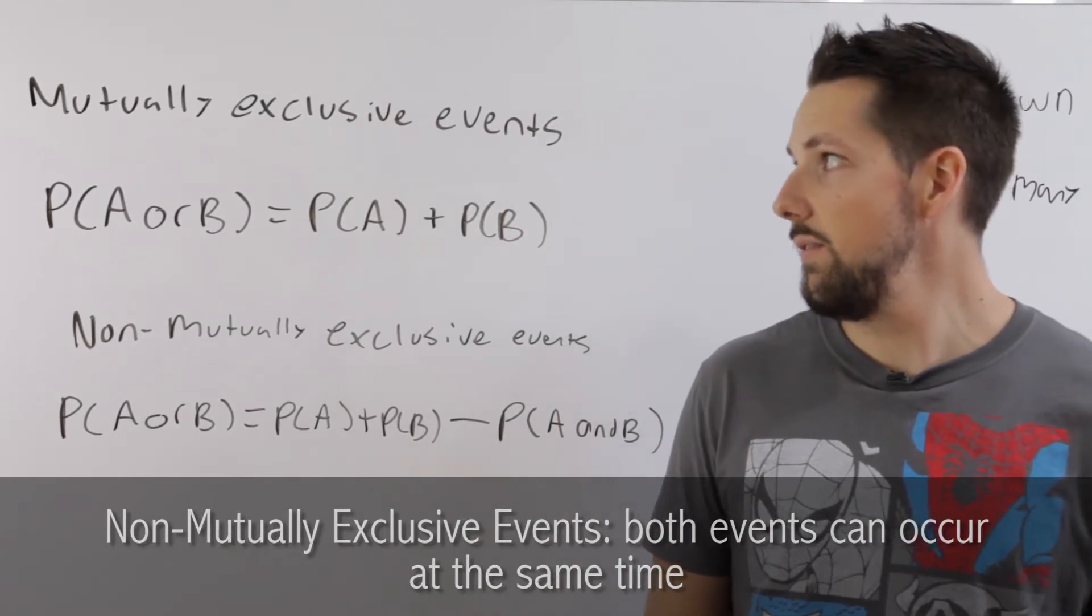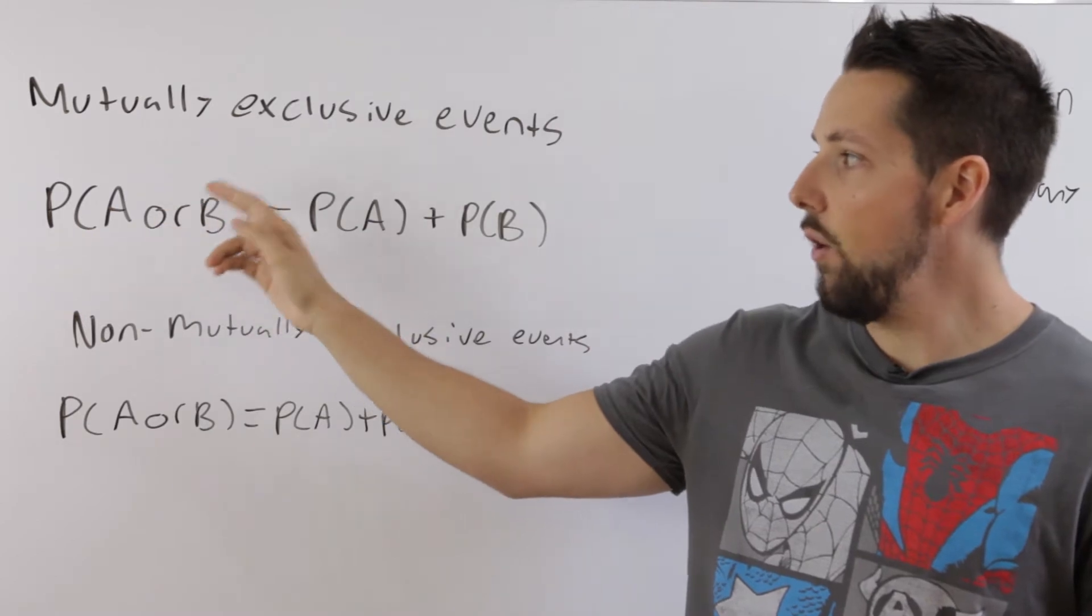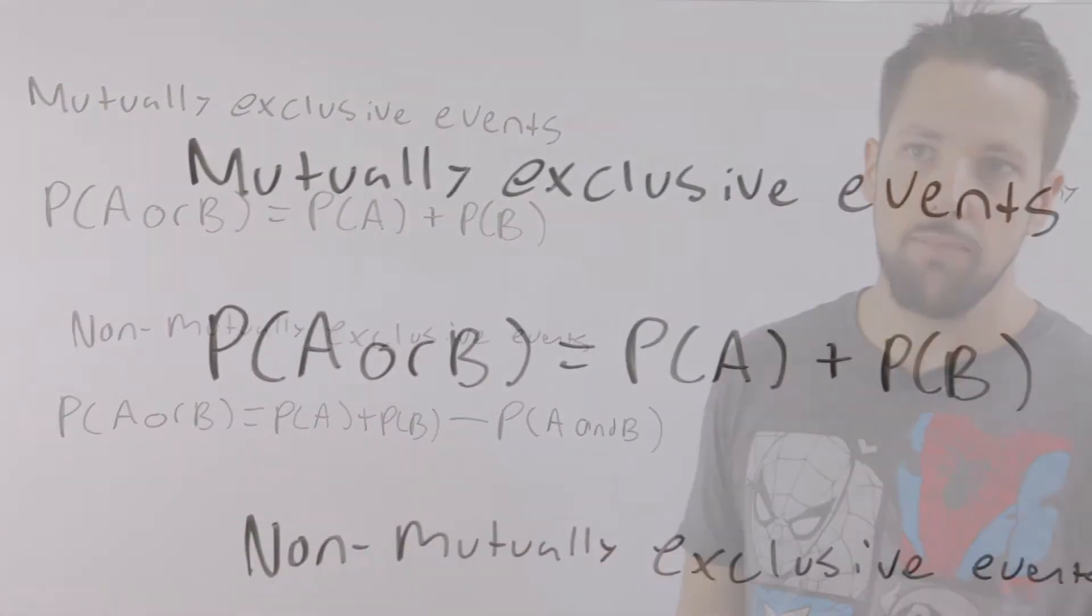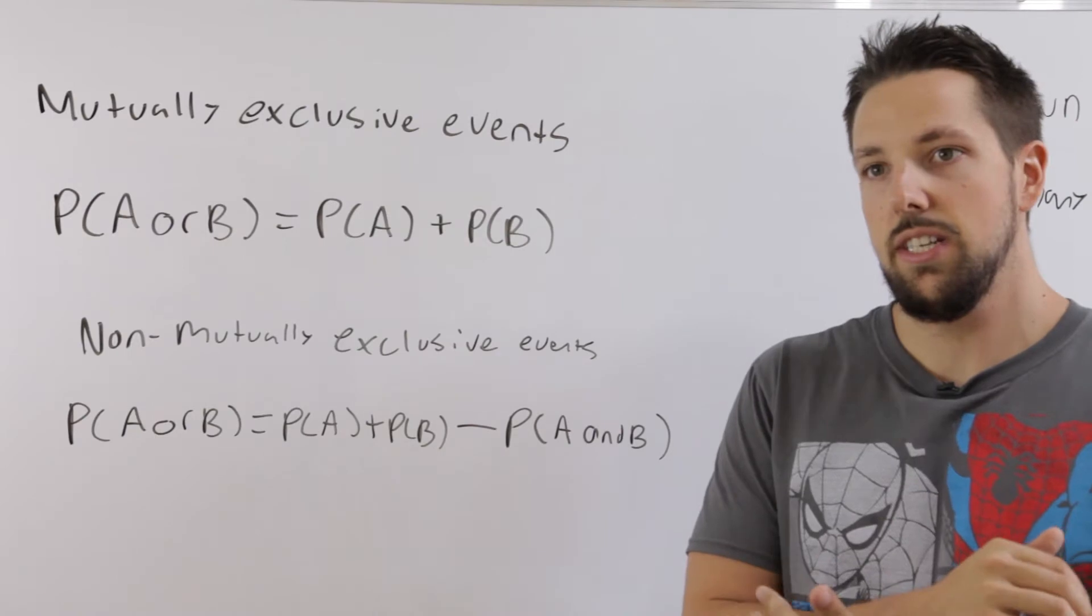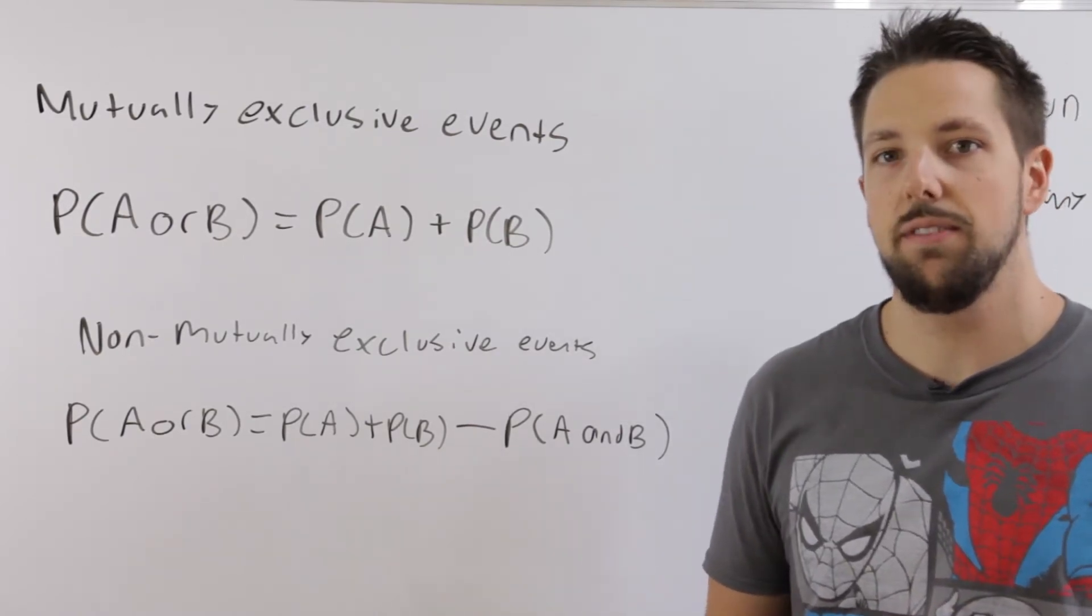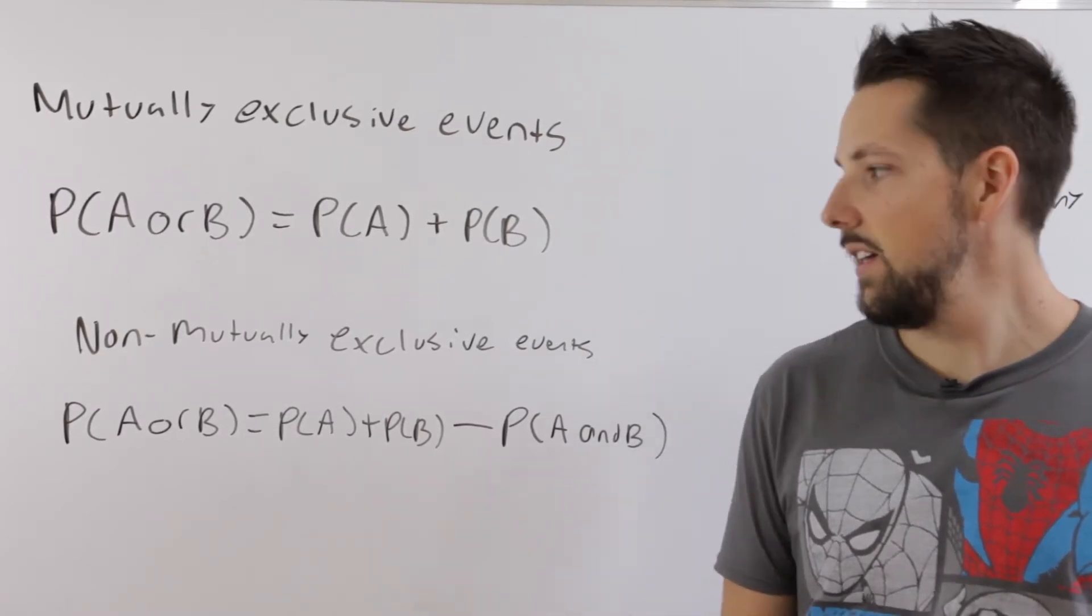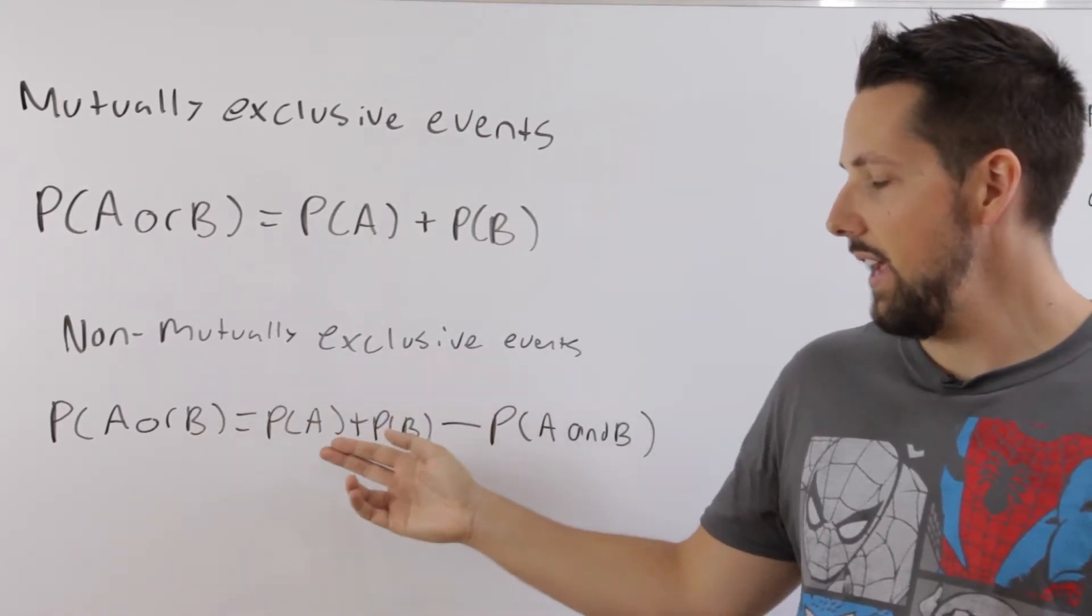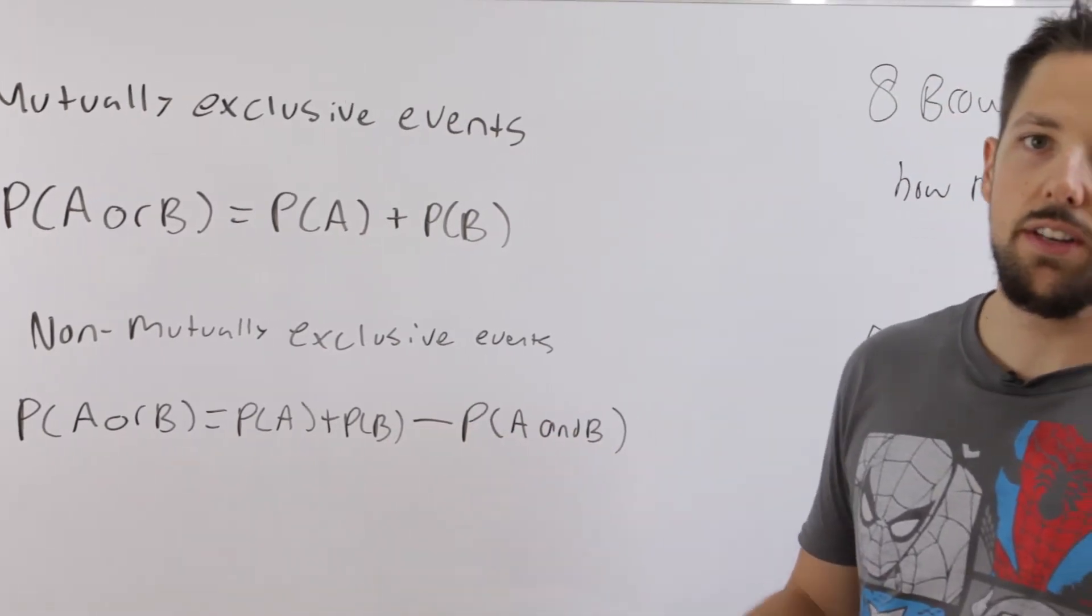When calculating probability for mutually exclusive events, the probability of A or B occurring is equal to the probability of A plus the probability of B. So it's pretty simple compared to what we've been doing. With non-mutually exclusive events, the probability of A or B occurring is more complicated because we have to take into account the intersection where both events happen at the same time. So the probability of A or B happening is the probability of A plus the probability of B minus them both happening.